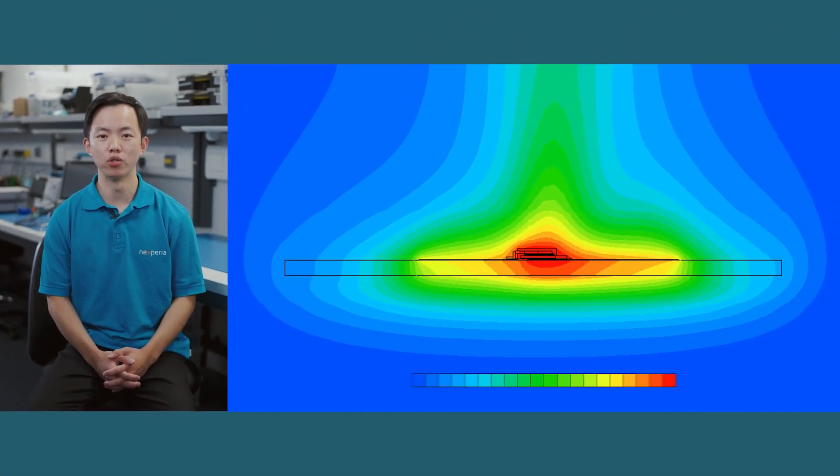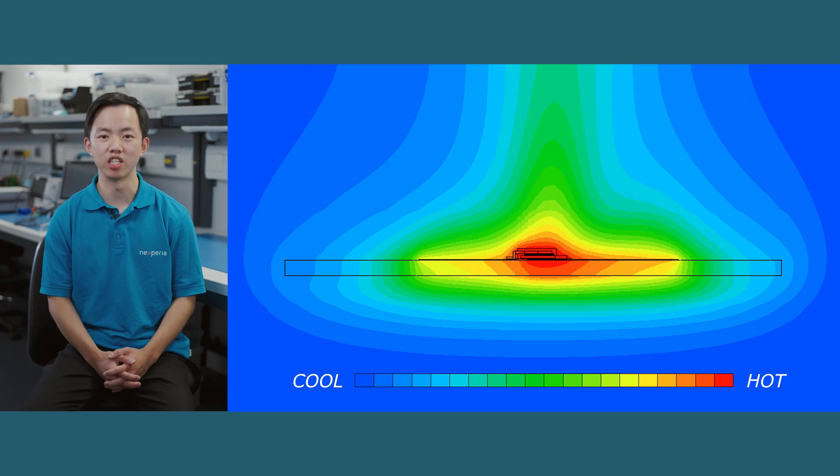If we take a look at the temperature distribution of a MOSFET on an FR4 PCB in still air from CFD simulation, we see that the top case temperature is similar to within the package where the junction is located.